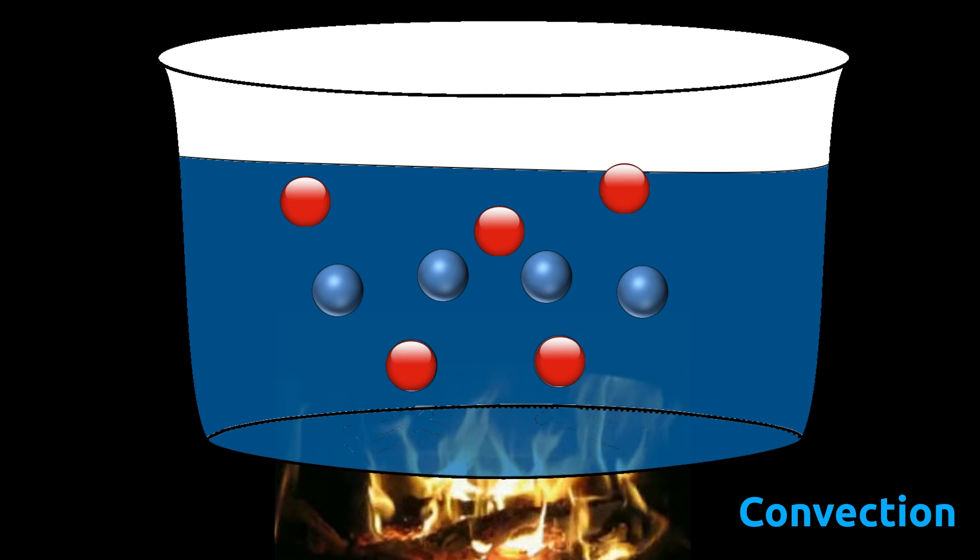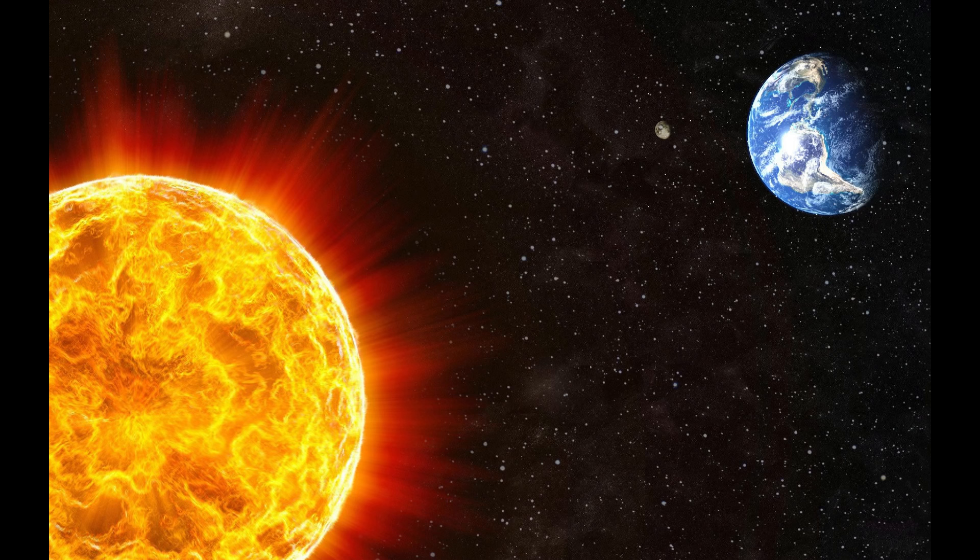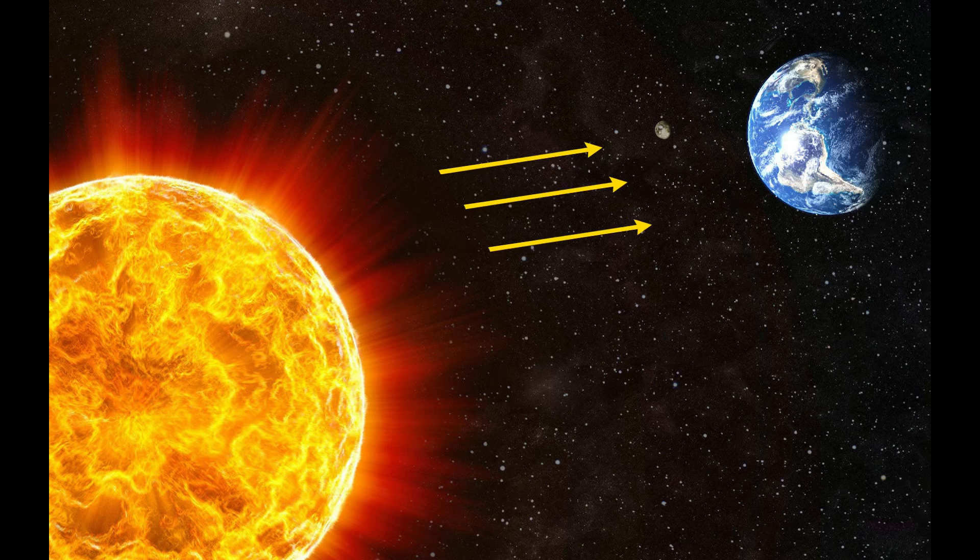In conduction and convection, there is a medium in which heat gets transferred. But there is no medium between the sun and earth, yet we still get heat from it. When heat transfer takes place without any medium, it is called radiation.